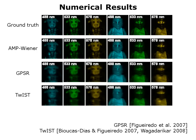Here are some numerical results. In different rows we show the ground truth, then the AMP Wiener result (our algorithm), and results for two other algorithms, GPSR and TWIST. The columns correspond to different wavelengths, which are different colors. AMP Wiener provides somewhat better results than the other two algorithms. For example, looking at the 488 nanometer frequency, there is some pattern on the Lego piece's shirt, and that pattern is somewhat preserved by AMP Wiener, whereas GPSR and TWIST blur it to a much greater degree.